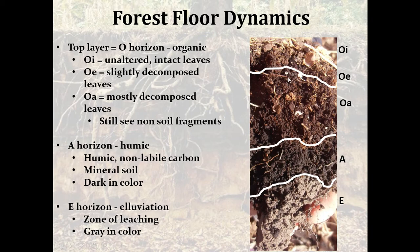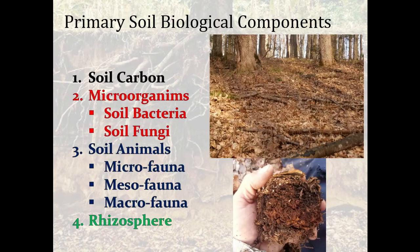Forest floor dynamics — remember we talked about our horizons or soil layers. We have the O horizon, categorized by Oi, Oe, and Oa sub-layers, then we move into the A horizon, and there is also an E horizon. These sub-horizons represent how decomposed the organic matter is, moving from unaltered, readily distinguished material all the way down to mostly decomposed leaves. We don't see mineral content until the A horizon, which contains humic non-labile carbon and is dark in color. The E horizon is a zone of bleaching, usually lighter or gray in color.